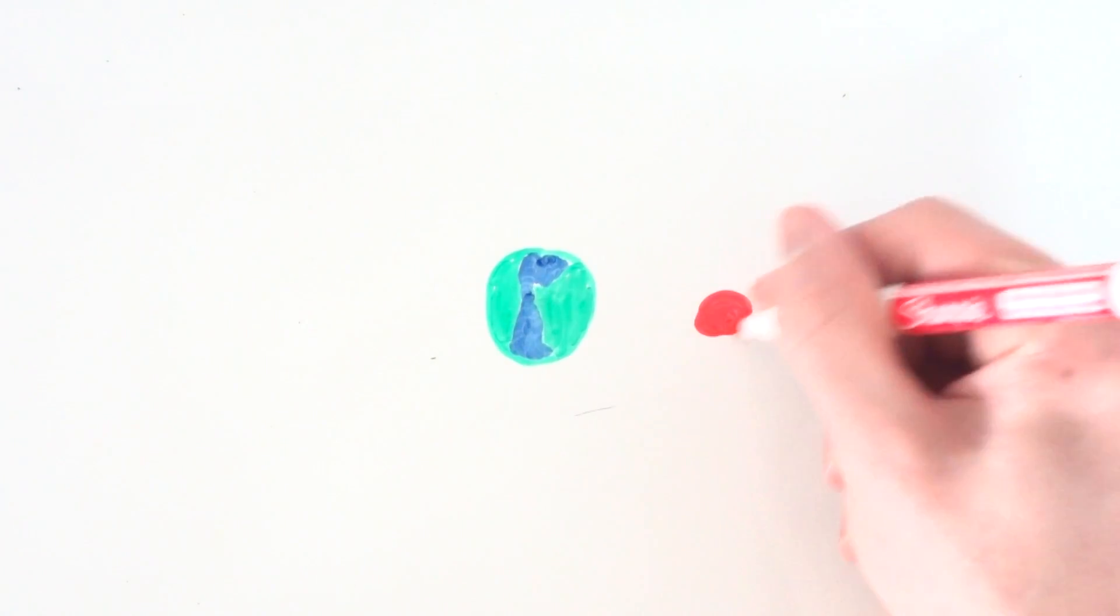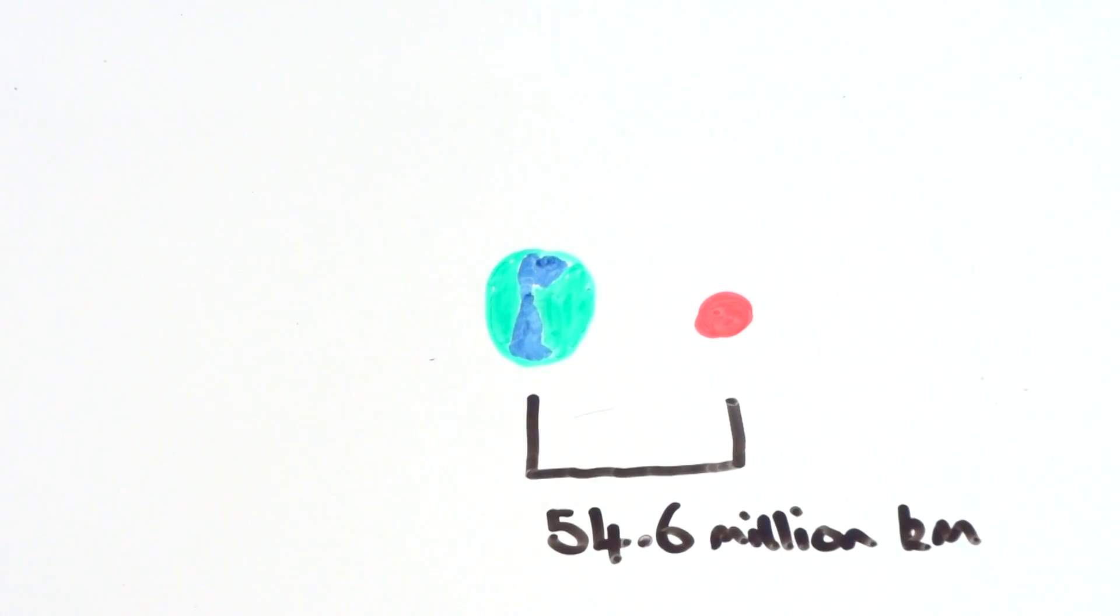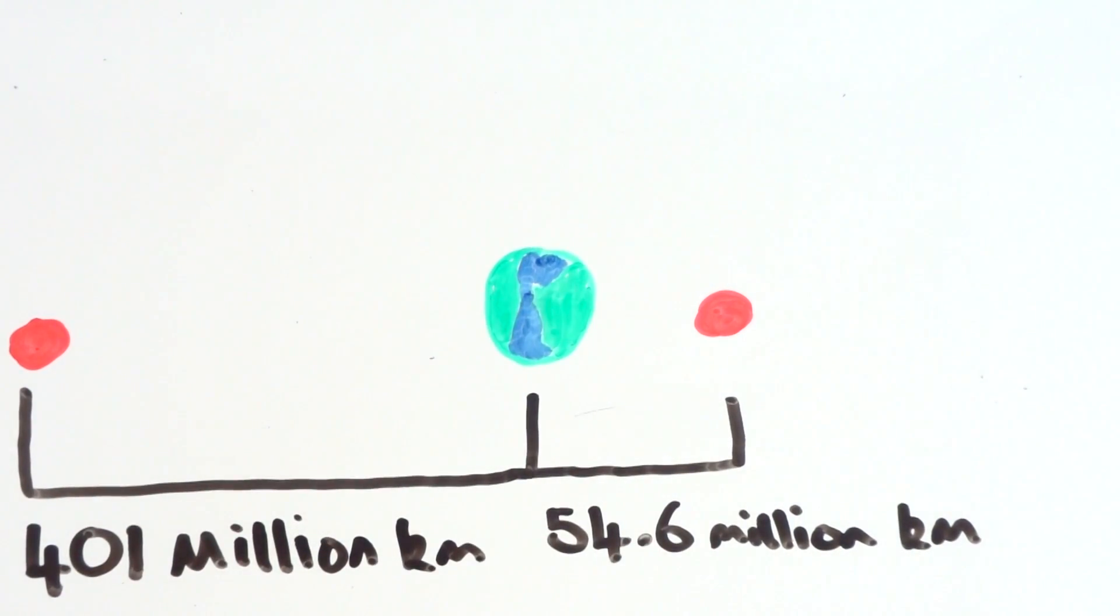Like all things in space, Mars is quite far away. At the closest point to Earth, Mars is 54.6 million kilometres away, but at the furthest point Mars can be 401 million kilometres away. That's a massive difference in closest and furthest away distances. This makes getting to Mars quite hard.